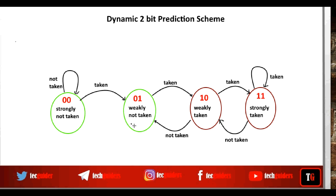Now we are in the weak state predicting that the branch will not be taken. If our prediction is correct — actually if the branch is not taken — we move to the strong state predicting that the branch will not be taken. And as long as our prediction is correct, we remain in that strong state. At any time if the prediction goes wrong, we move to the weak state predicting the branch will not be taken. And if there are 2 mispredictions, we move to the state predicting that the branch will be taken.